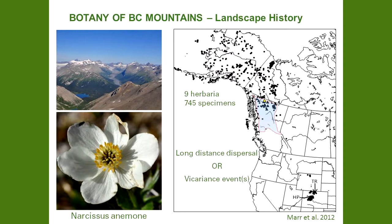One possibility is long-distance dispersal, whereby propagules of a species disperse a great distance from one location to another without establishing populations in the intervening space — the biota of volcanic islands like Hawaii are established in this manner. In the case of Narcissus anemone, long-distance dispersal does not seem likely because the seeds are not adapted to travel a great distance. The second possibility is that during a colder period when open tundra was widespread at lower elevations, this species and many others spread widely across western North America. When the climate warmed, the only suitable habitat was on the mountain tops — the valley bottoms dried out, the slopes became forested. This explains how it could have become so widespread, but doesn't really explain the gap in the distribution.